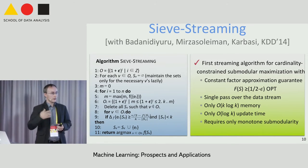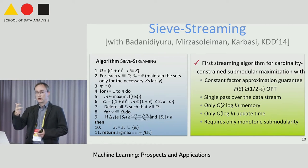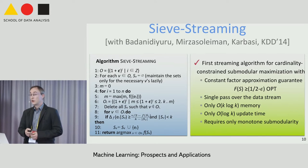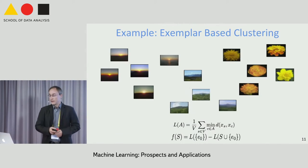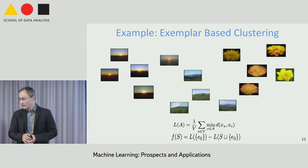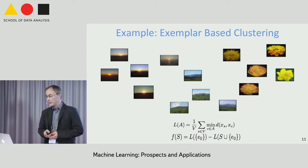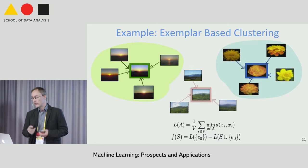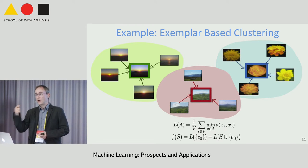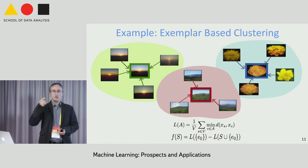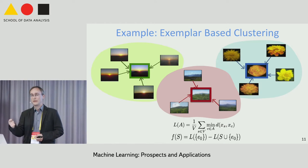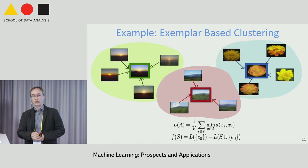Let me show some numerical examples and the objective functions used. People have looked at many suitable objective functions for different types of summarization tasks. One is exemplar-based clustering: pick a small subset of items as exemplars to represent the others. Given a distance function or divergence, we evaluate solution quality using a k-median-like objective that sums the distance from each element to its closest exemplar. The reduction in k-median cost is a monotone submodular function—no symmetry or triangle inequality required, giving a lot of modeling freedom.